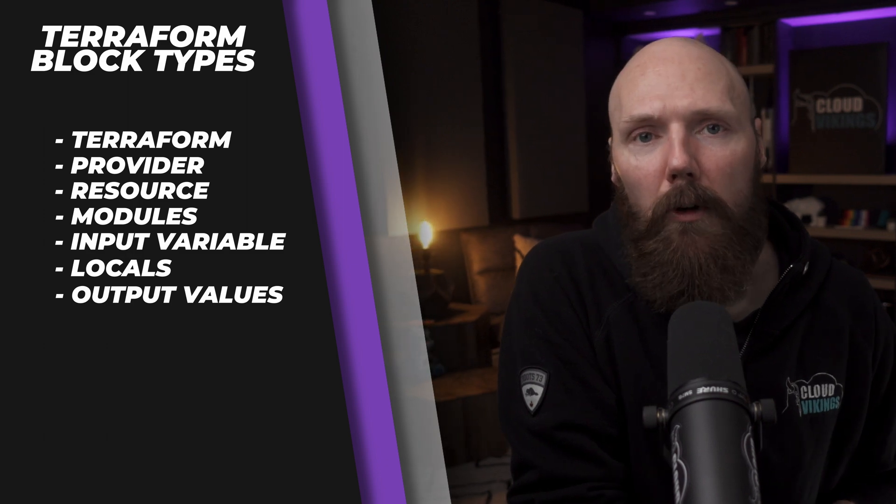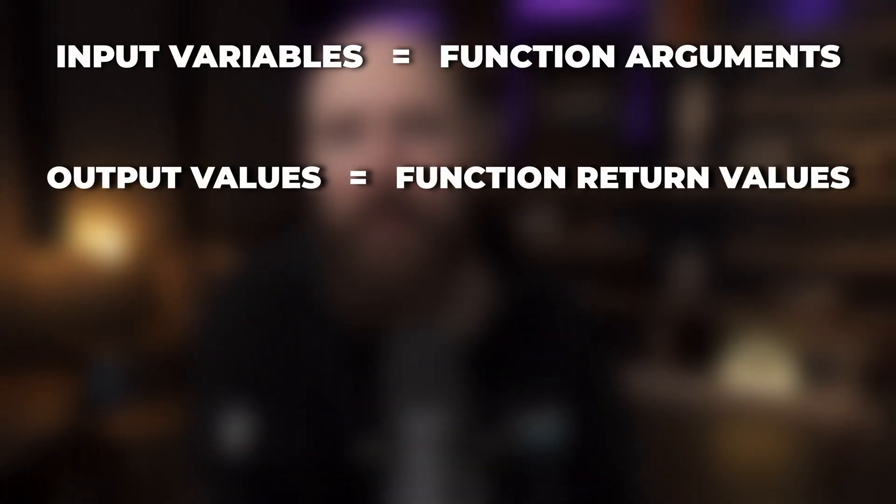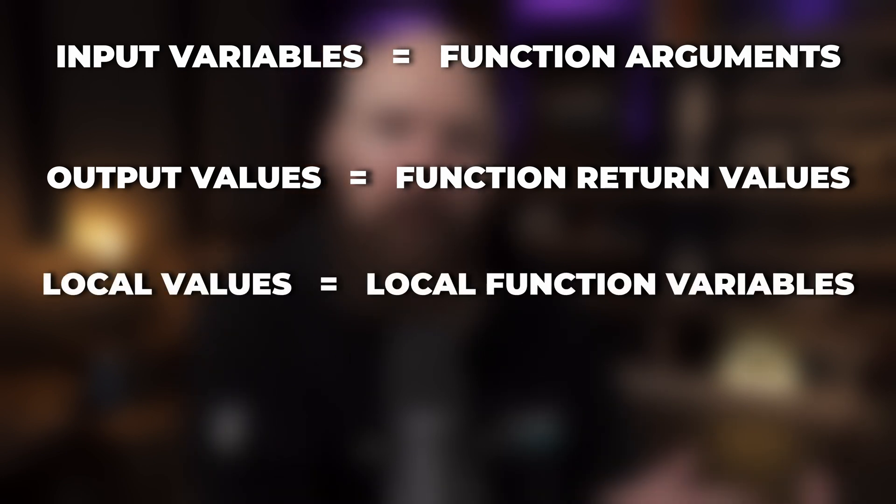Next we have the output values block, where we can capture return values from infrastructure resources. For example, when we launch an EC2 instance it receives a unique IP address generated as the resource is created — we need to capture that IP inside Terraform through output values. We can then reference these named values in other parts of our Terraform modules. If you have a programming background: input variables are like function arguments, output values are like function return values, and local values are like temporary local variables.